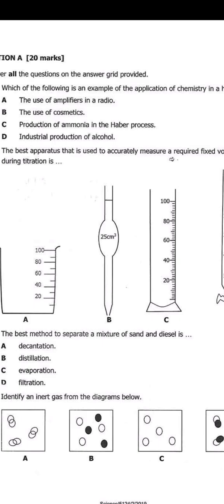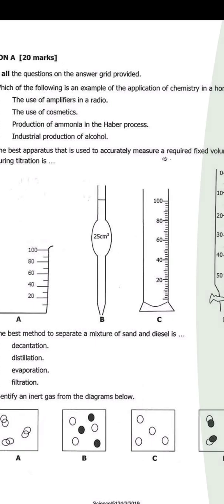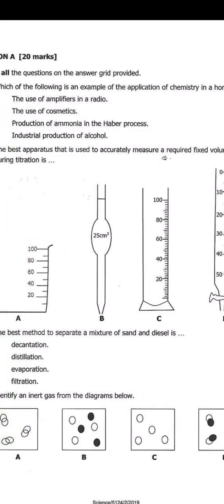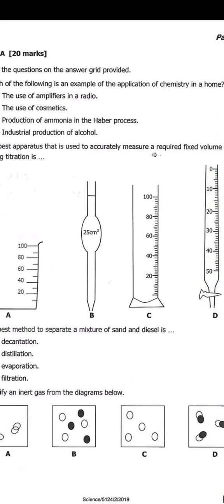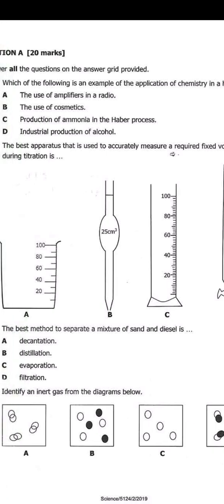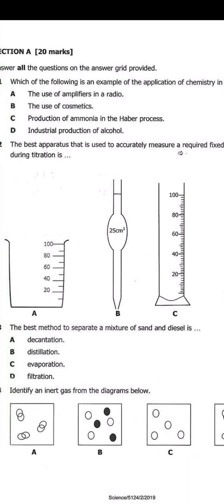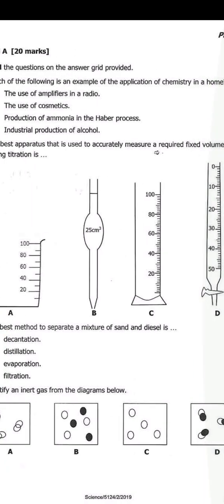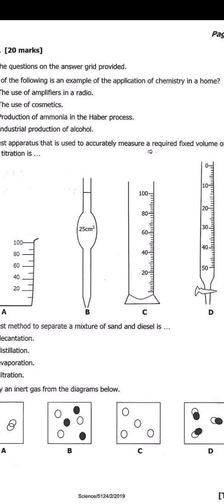The best apparatus that can be used to accurately measure a required fixed volume during a titration is fixed volume. So, what we know is this. For this one, it's a graduated beaker. Then, there's a pipette. Then, there's a measuring cylinder. Then, there's a burette.